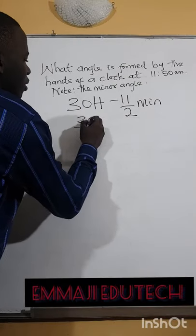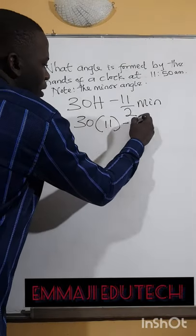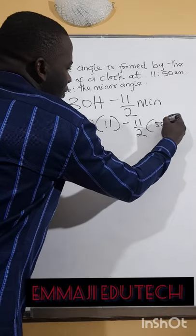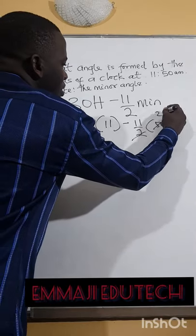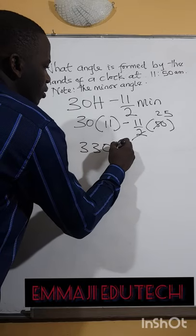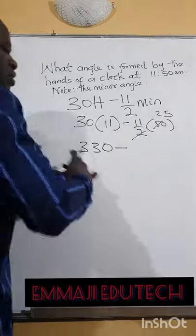Now let's solve this. 30 bracket 11 minus 11 over 2 bracket 50. This can go 25. 30 here, we have 330 minus. This times this.